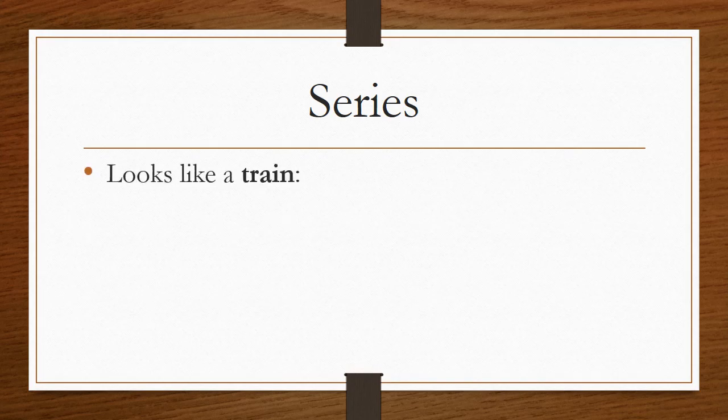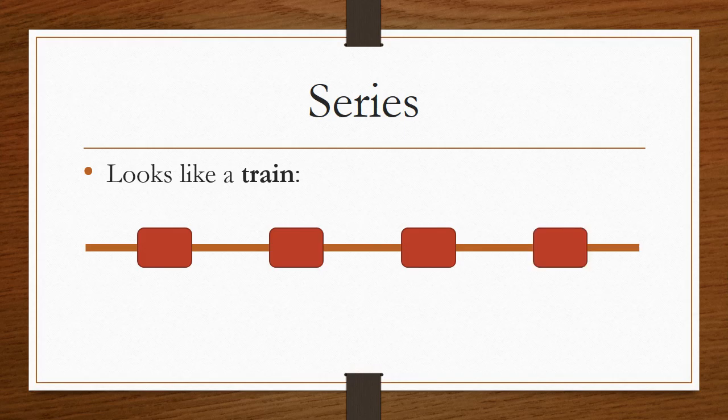A series circuit looks like a train. Each component is connected end-to-end. The same current travels through each component.